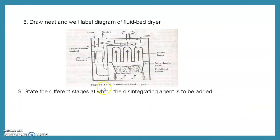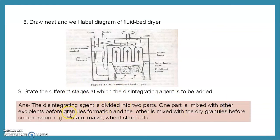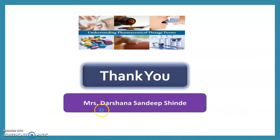Next question: state the different stages at which disintegrating agent is to be added. The disintegrating agent is divided into two parts — one part is mixed with other excipients before granule formation, and the other part is mixed with dry granules before compression. Examples of disintegrating agents include potato, maize, and wheat starch. Thank you very much for attending this practical session.